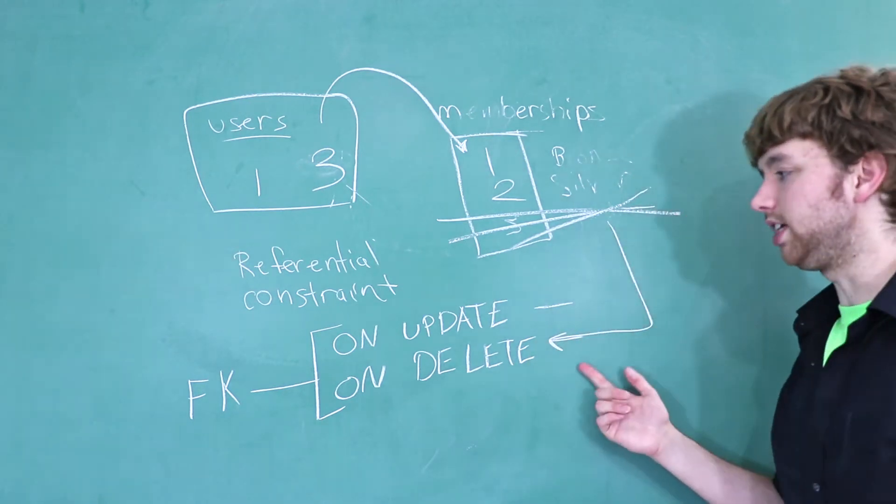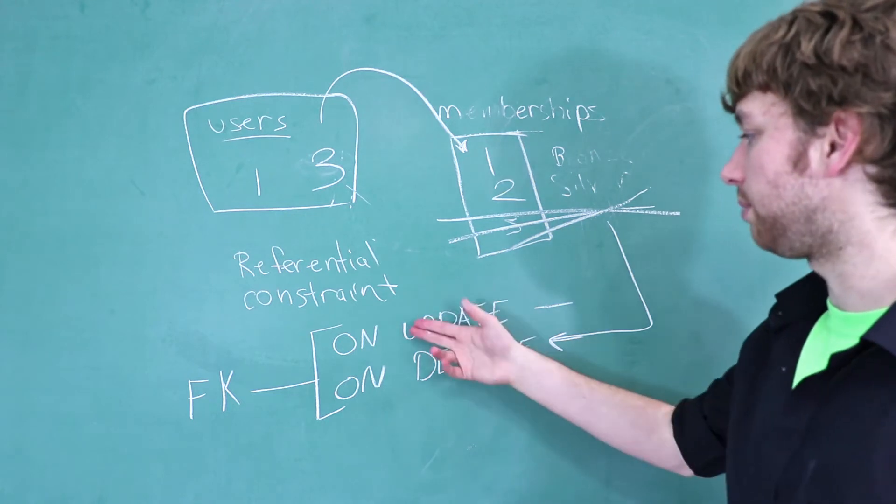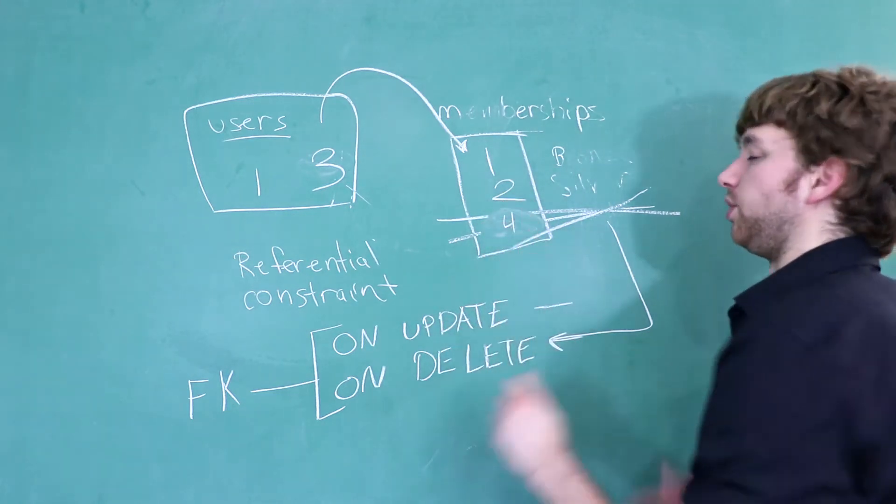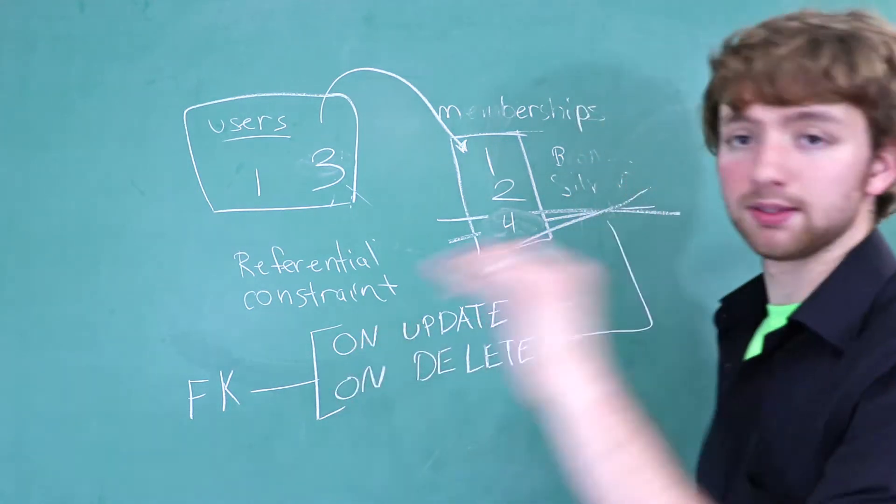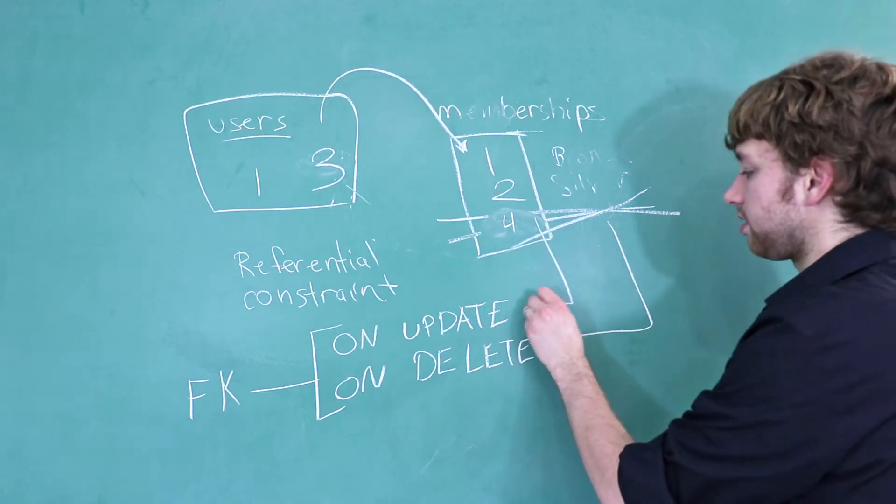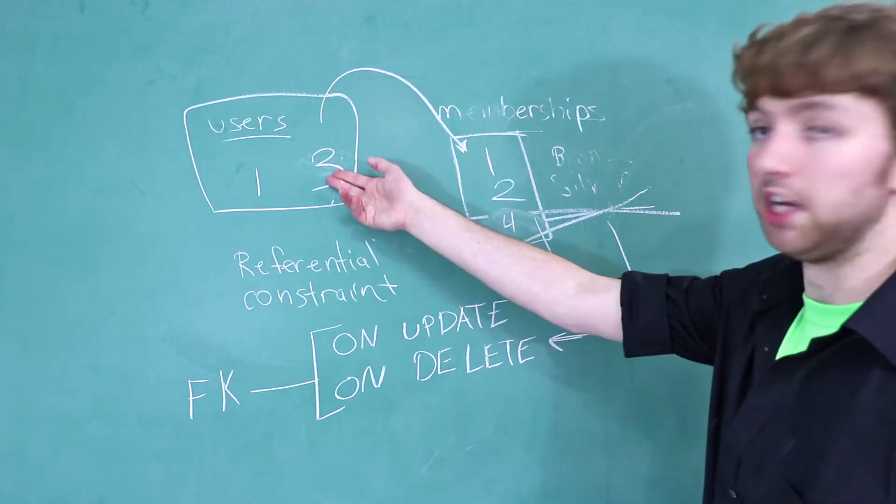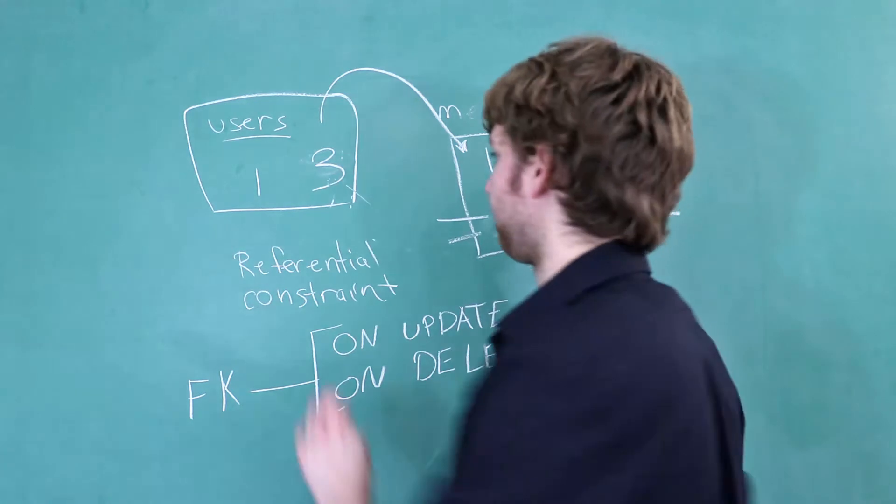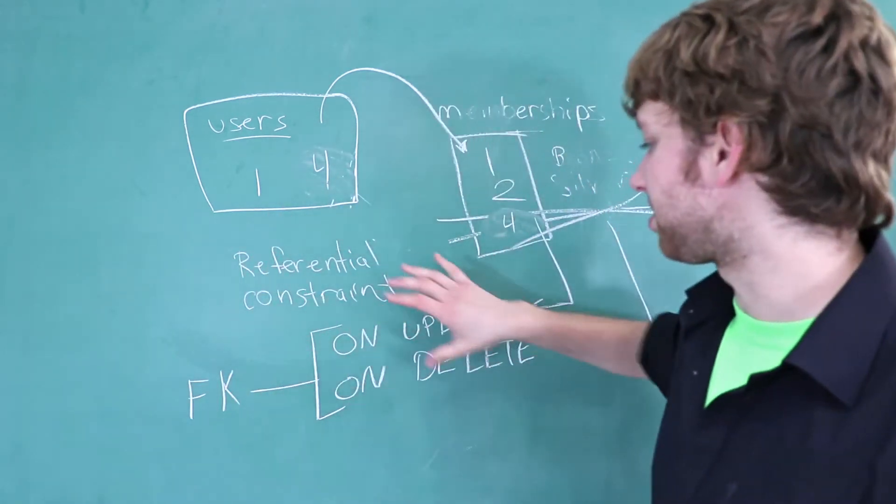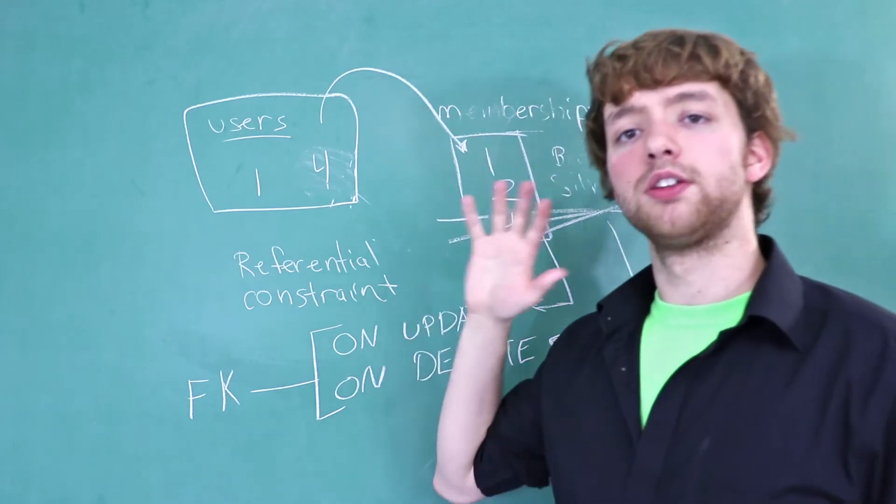What happens when we delete? The same thing happens with an update. What happens if we change this three to a four, which generally primary key should never change, but that's besides the point. The on update is going to kick in then. What happens to this value over here? You see what I'm saying? For example, it could update it. That would be cascading. There are some specific options that I'm going to talk about. So let's do that now.